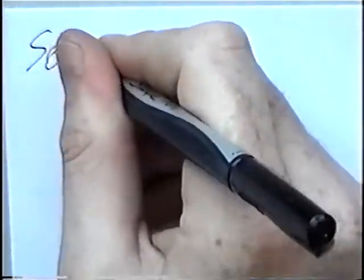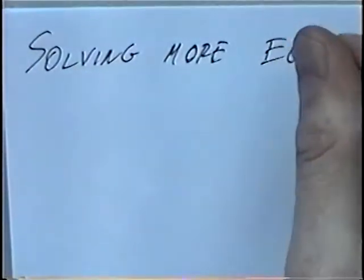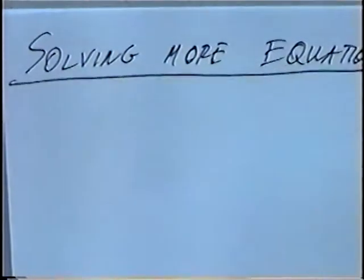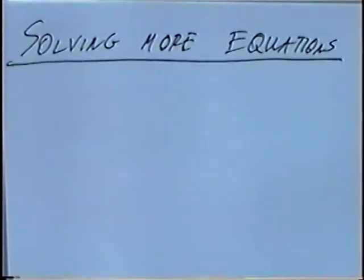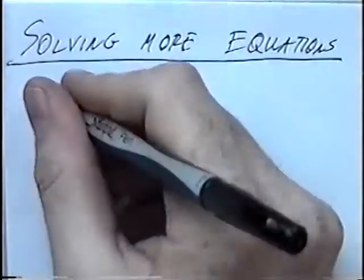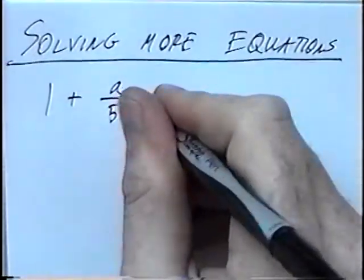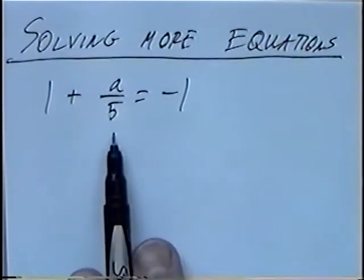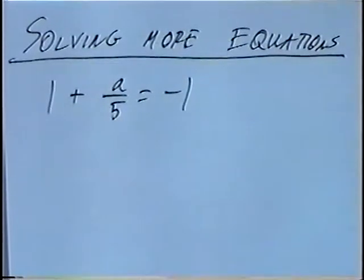The title of this next section is Solving More equations. First equation we'll solve, 1 plus a over 5 equals negative 1. This equation has a fraction, again we'll solve with these same steps, we want to get a by itself, so our final answer would be a equals the number.